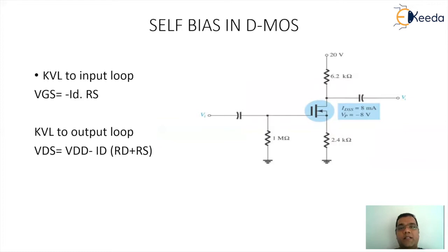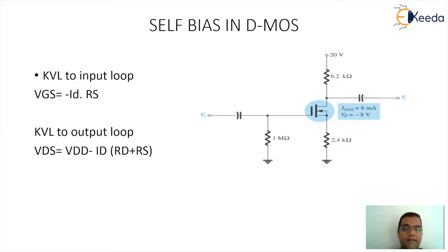The next arrangement is a self-bias arrangement in D-MOSFET. If you observe carefully at the input side, you will find a resistance of one mega ohm as RG, but the VGG battery will be absent. One new member added to the circuitry is the resistance at the source end, RS. We are biasing the D-MOSFET with the help of RS resistance, which is why this circuitry is defined as a self-bias arrangement.